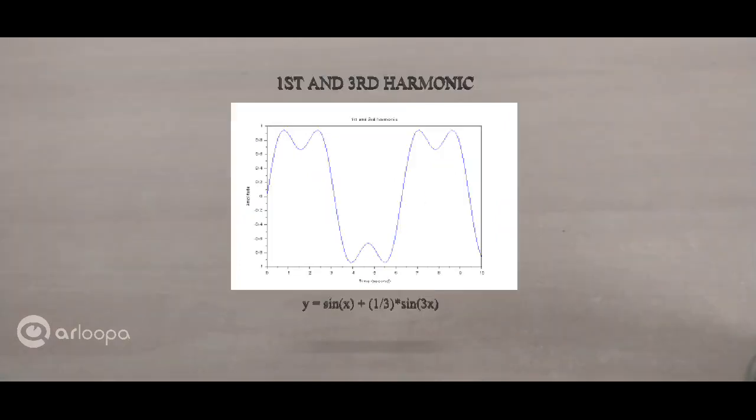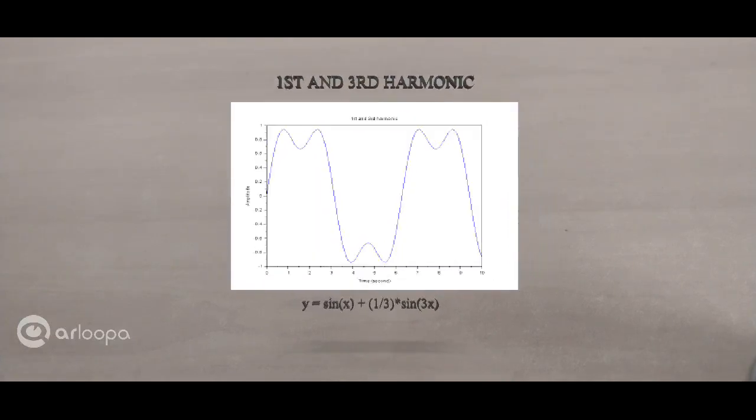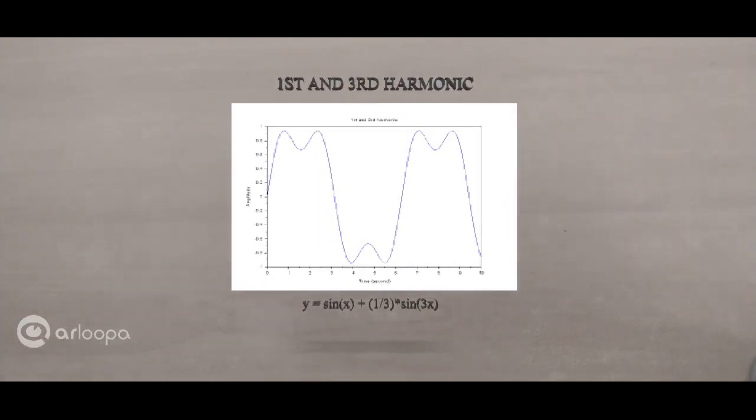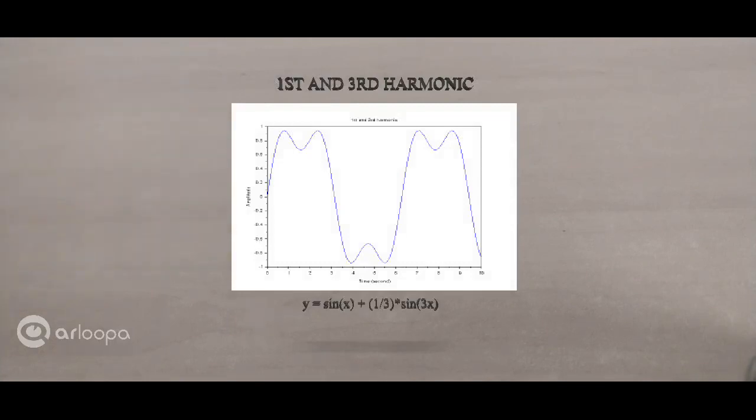Alright. So in this graph, as you can observe, we have the first harmonic. And in addition to the first harmonic, there's also the third harmonic as evidenced by the equation: sine x plus one third sine three x. And as you can observe, the pattern is gradually shifting and it's no longer a sine wave, not a square wave either, but it's shifting toward becoming a square wave.